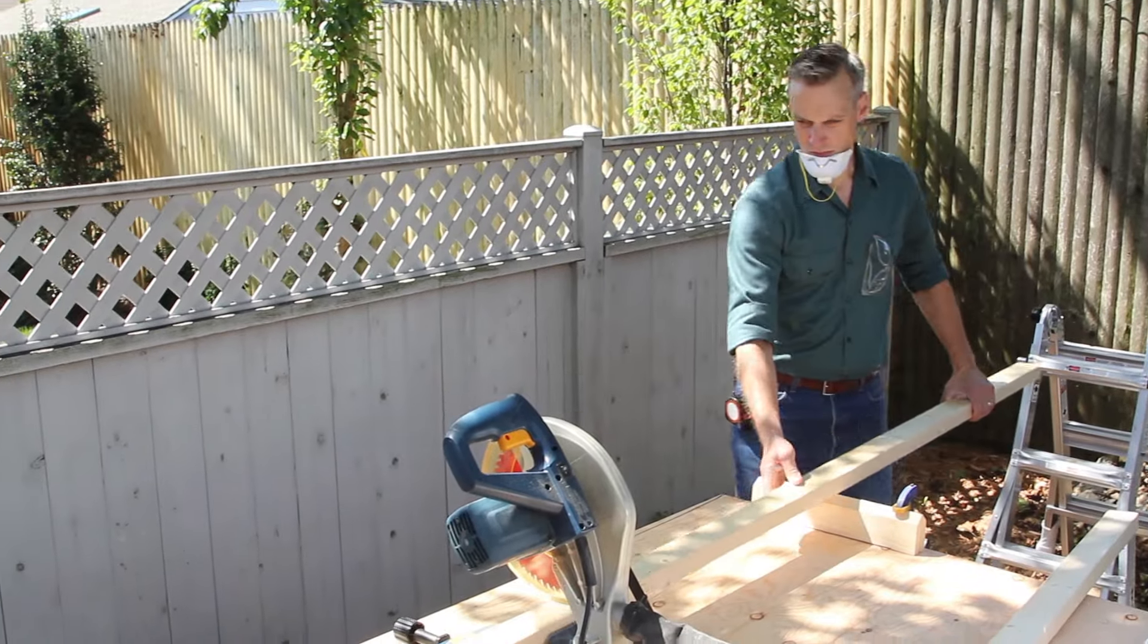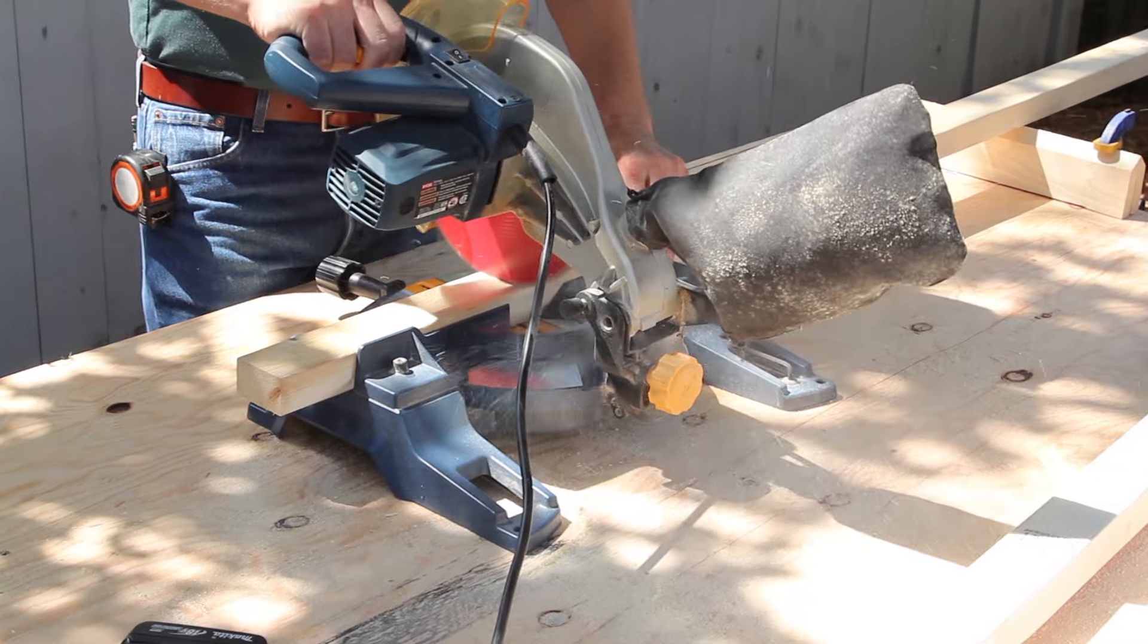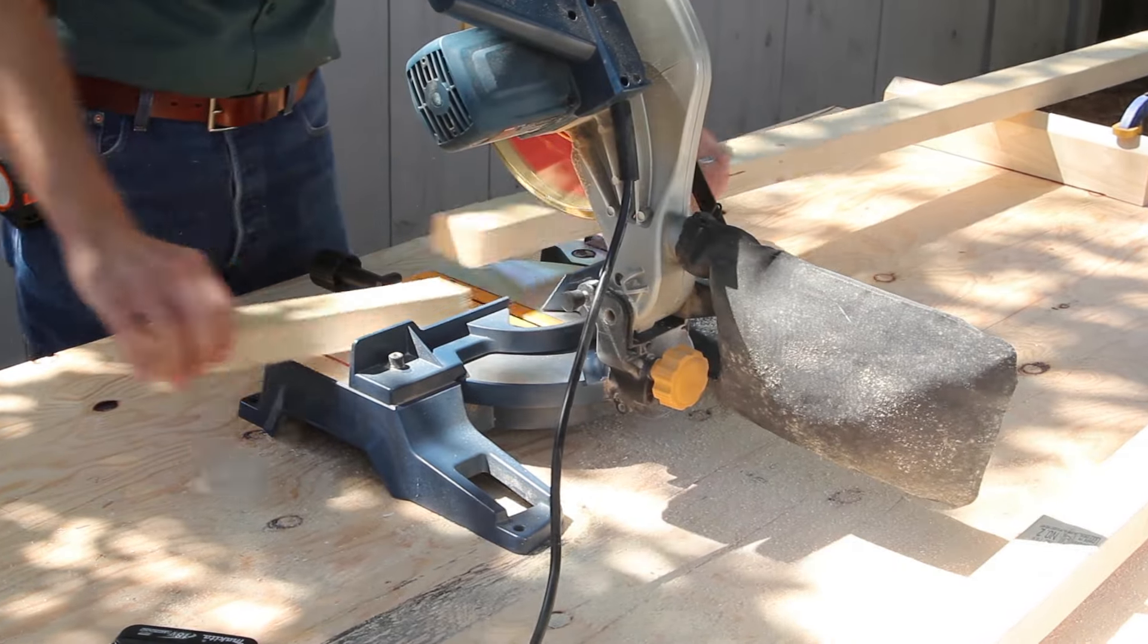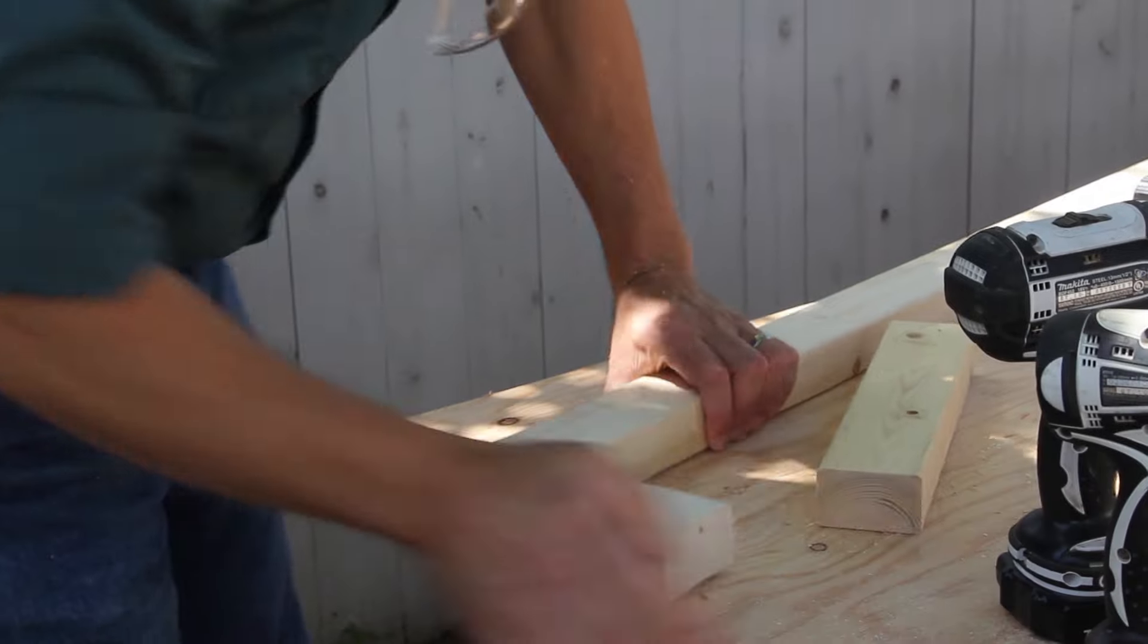Now, if you don't have a helper, you can make a support called a dead man to hold up one end of the beams. Use scrap lumber to make a tall tee three-quarters of an inch shorter than the ceiling. We just use two-by-three scrap lumber.